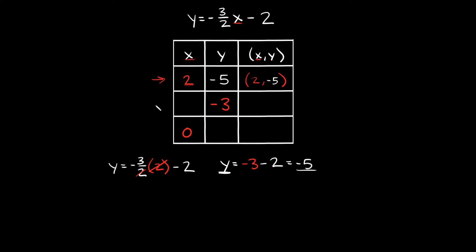Now let's move on to this next one right here. We don't know what the x-coordinate is here, but we do know what the y-coordinate is — negative 3. So we're going to have our ordered pair: we don't know what the x is, but we know the y is equal to negative 3 since it's given to us.